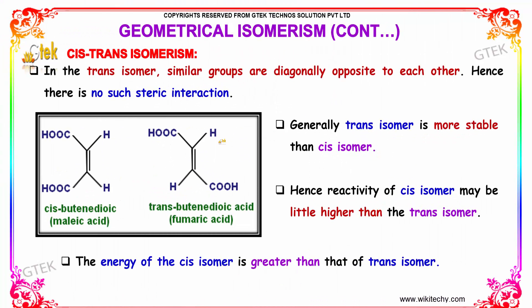In the trans isomer, similar groups are diagonally opposite to each other, so there is not much steric hindrance. Therefore, the trans isomer is generally more stable than the cis isomer, and the reactivity of the cis isomer may be a little higher than that of the trans isomer. Comparing their energies, the cis isomer has greater energy than the trans isomer.